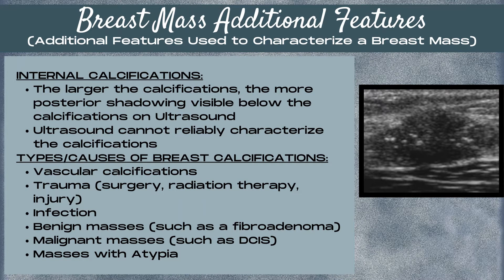Types and causes of breast calcifications include vascular calcifications, which occur in a vessel. Calcifications can be due to trauma from surgery, radiation therapy, or injury to the breast. They can be due to infection. They can be associated with benign masses such as a fibroadenoma, or found in malignant masses such as DCIS. They can also be associated with masses that have atypia. Whenever a mass is visualized with calcifications, the calcifications are carefully characterized on the mammogram image and the features of the mass are also characterized to determine whether the mass is suspicious in nature or not.